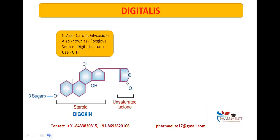Digitalis belongs to the class of cardiac glycosides, which are the glycosidic drugs that have cardiac inotropic properties. It is also known as foxglove. The main source is Digitalis lanata and its main use is in CHF — congestive heart failure — a condition where the heart muscles fail to pump blood effectively to all the organs of our body.